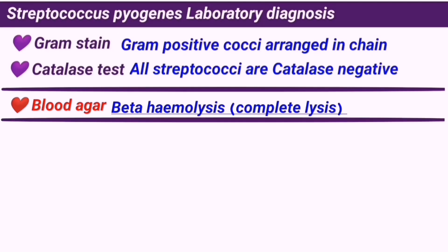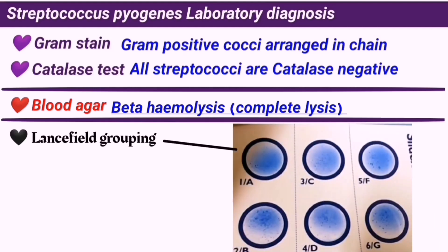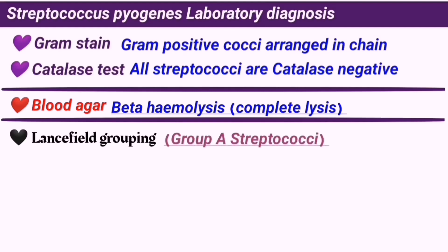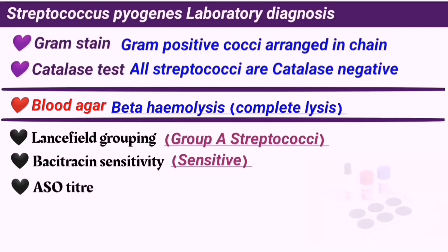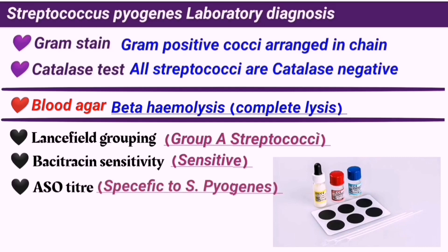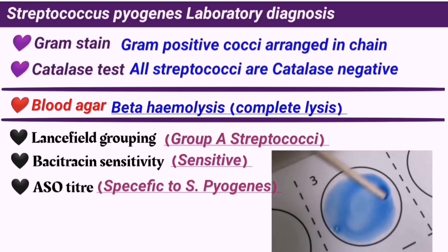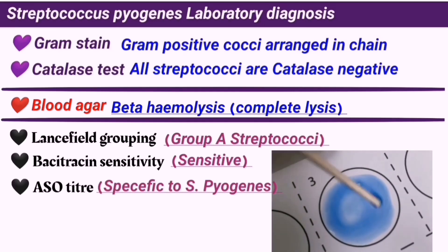The first test is the Lancefield grouping test. S. pyogenes is the only streptococci which belongs to group A of this classification. Bacitracin sensitivity testing can also be carried out because this species is the only one susceptible to bacitracin. Another test to determine the presence of S. pyogenes is the antistreptolysin O test, which gives quantitative analysis by showing the amount of S. pyogenes in the blood.